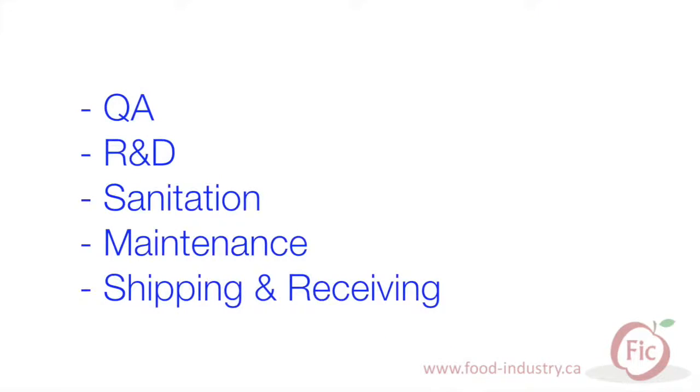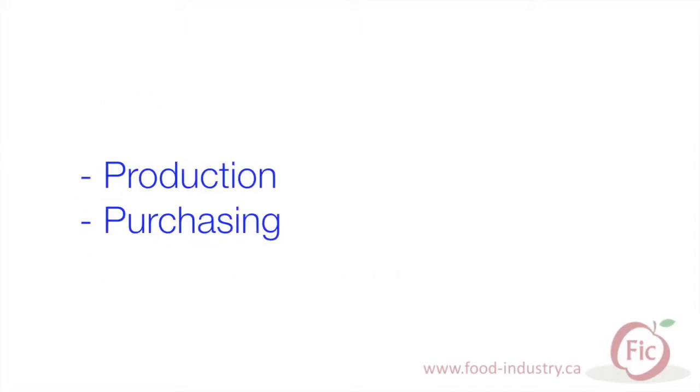After the commitment is obtained, the HACCP team can be assembled. The HACCP team should be multidisciplinary and should represent individuals from all areas of the facility. For example, this team can include representatives from QA, R&D, sanitation, maintenance, shipping and receiving, production and purchasing departments. Bringing in knowledge from different parts of operations helps identify food safety risks from different points of view. It also facilitates communication to each department for successful implementation.